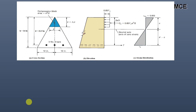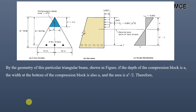We can see the cross-section elevation and strain distribution for our beam. This is a triangular shaped beam. If the depth of the compression block is 'a', then from similar triangles the width at the bottom of the compression block will also be 'a'. The area of this compression block (shown in blue) will be equal to half of base times width, so it equals a²/2.